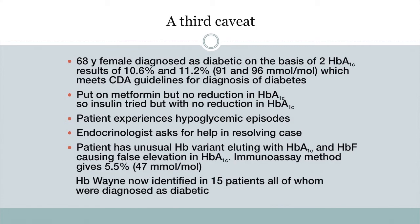What we found was that this individual had an unusual hemoglobin variant that co-eluted with hemoglobin A1c and hemoglobin F, causing a false elevation in the hemoglobin A1c result. The immunoassay method gave a result of 5.5, but that's not a true answer either. We identified this hemoglobin variant as hemoglobin Wayne, and have since identified it in 15 individuals, all related to this original case.